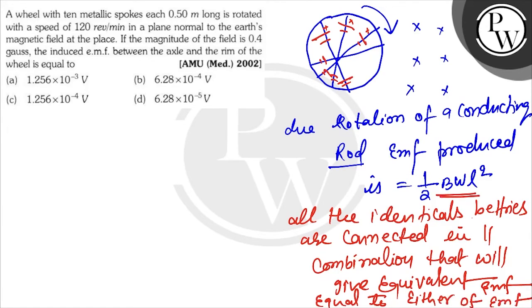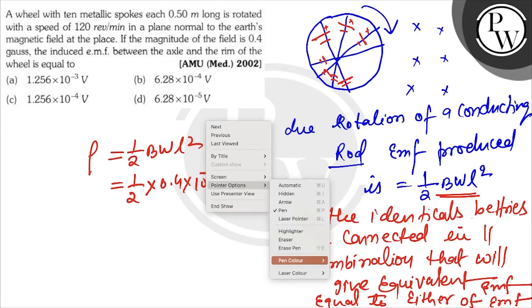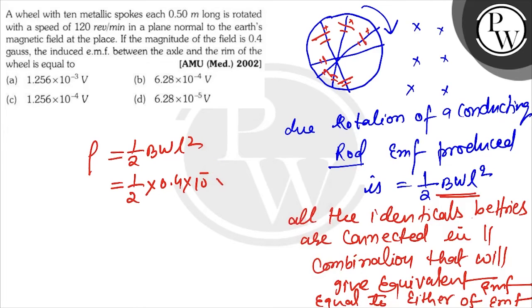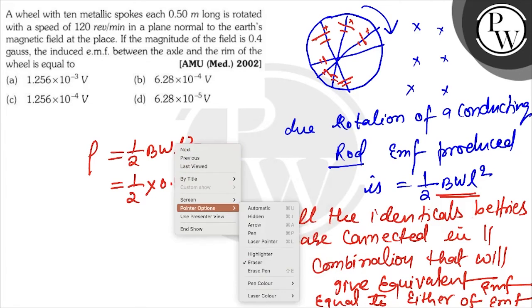Total is 1/2 times 0.4 times 10^-5, sorry, 4 times 10^-1 Gauss, which is 10^-4 Tesla.